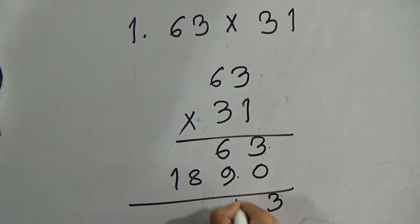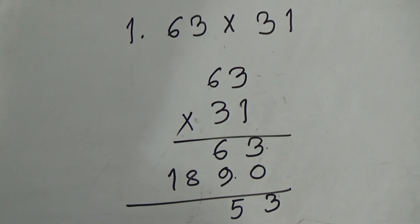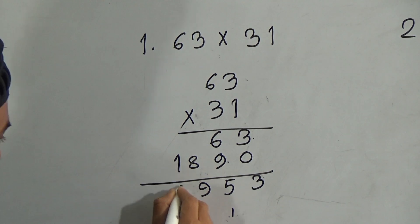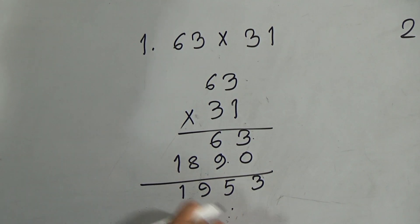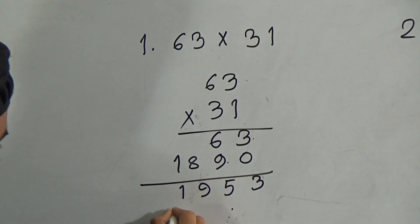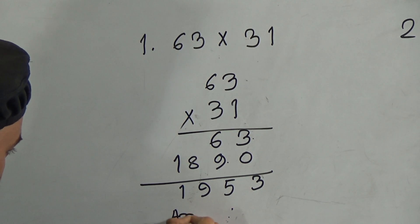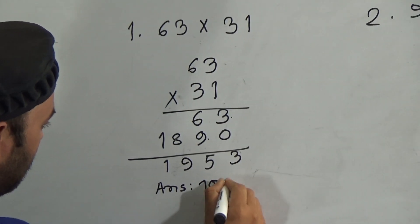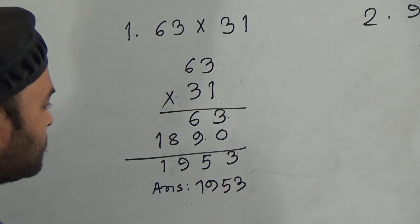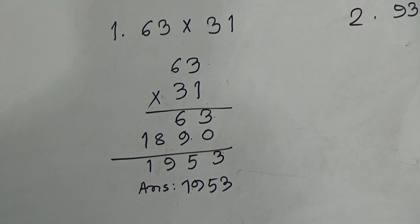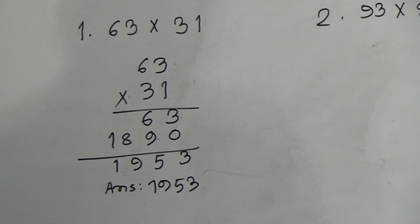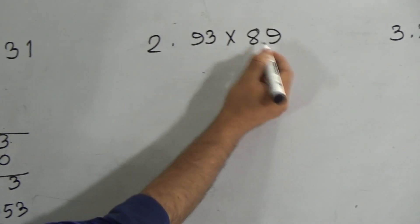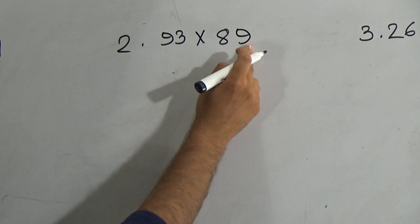Three sixes are 18. Now add these numbers: three plus zero is three; nine and six is fifteen, there is a carry of one; one and eight is nine; and one and one. So the answer is 1953. Hope my dear students you understood this one.